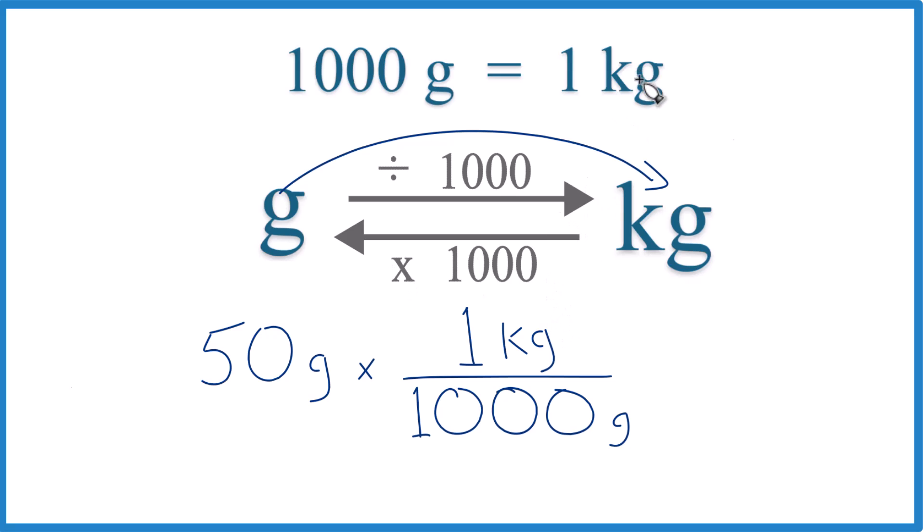So we're going to multiply by the conversion factor. And remember, one kilogram is a thousand grams. One kilogram is a thousand grams. Grams on the top and the bottom, they cancel out.